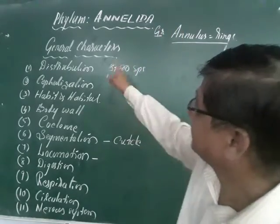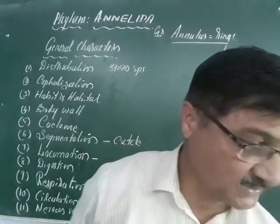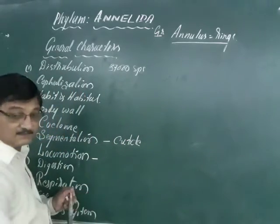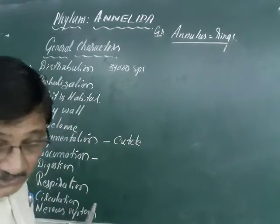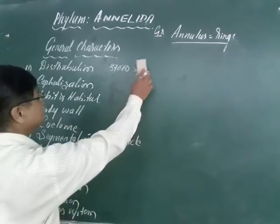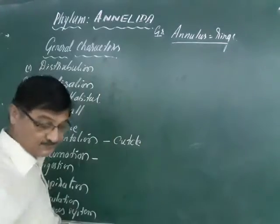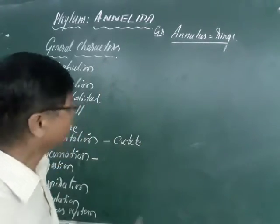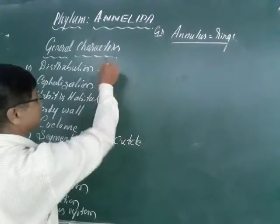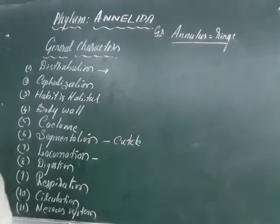The general characters: first, distribution. These animals are distributed all over the world. They are seen in any part of the world.